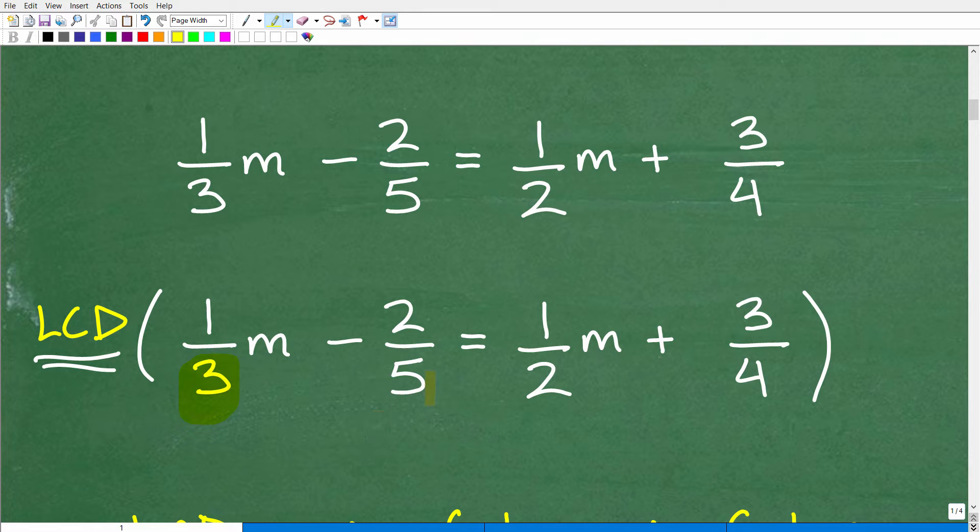So, how do we get rid of the fractions? Well, you can see here, I have the step, the best approach. And that is to multiply everything by the lowest common denominator. So, we have to look at these denominators, 3, 5, 2, and 4. And we have to figure out what the lowest common denominator is.